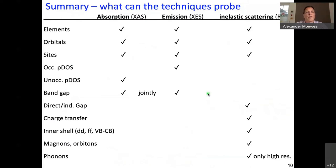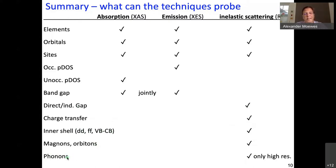It would be helpful to make a brief overview of what parameters each technique probes. Element specificity is common to all three techniques — absorption, emission, and inelastic scattering. The occupied partial density of states is probed by emission, the unoccupied by absorption. If you combine the two on a common energy scale, you can determine the band gap. RIXS also allows you to determine whether the band gap is direct or indirect, and a number of fundamental excitations within the material, like charge transfer, crystal field transitions such as d-d and f-f, valence to conduction band excitations, magnons, and orbitons. With very good resolution, you could also probe phonons.